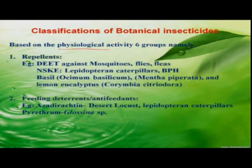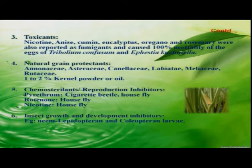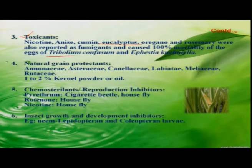Based on their physiological activity, botanical insecticides can be grouped into six groups. The first is repellents — most botanicals act as repellents, and among them DEET is commercially available and used against mosquito, flies, and other insects. The next group is feeding deterrents, also referred to as antifeedants. The best-known example is azadirachtin, which normally acts as an antifeedant and sometimes even as a repellent. Some botanicals also act as fumigants — for example, eucalyptus, which can produce up to 100 percent control in stored grain pests like Tribolium confusum. These botanicals are used as natural grain protectants in most areas.